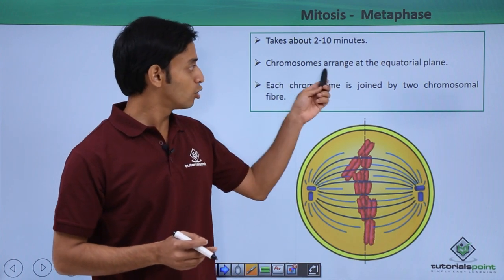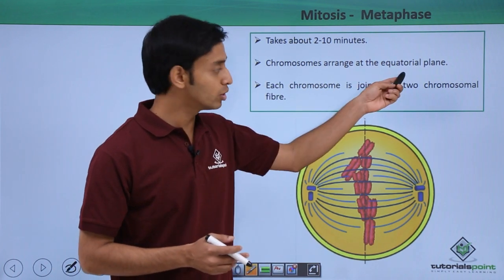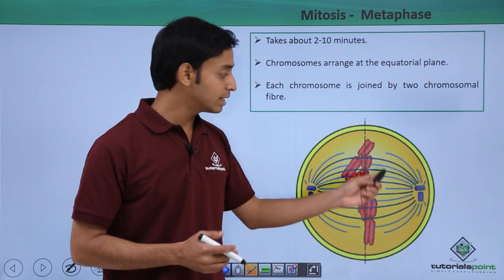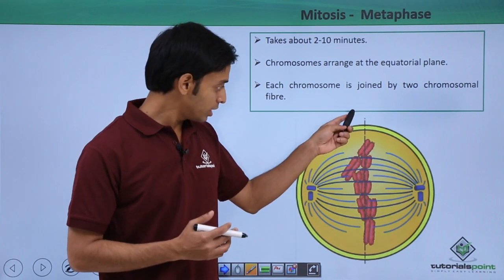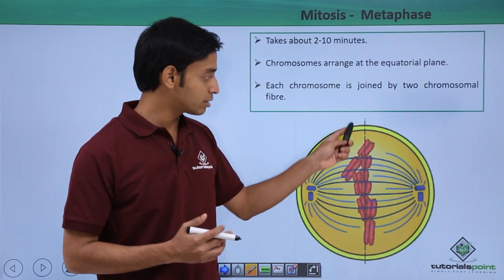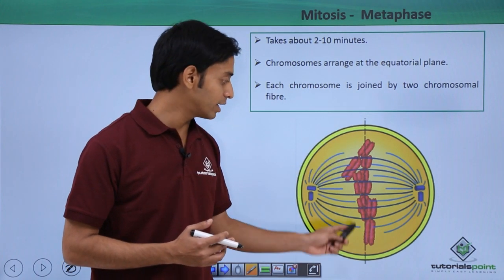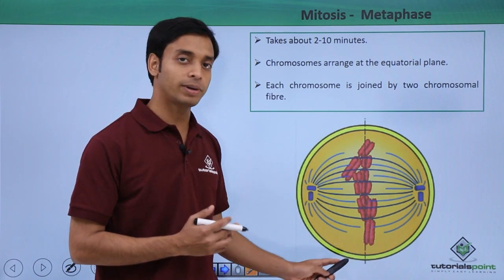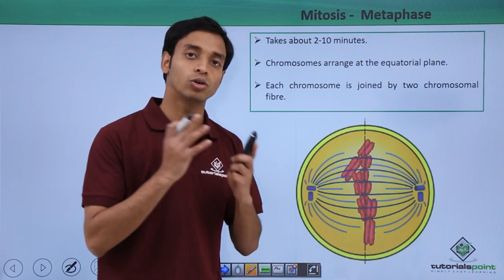During metaphase, the chromosomes are arranged at the equatorial plane. Let us take a look in this picture. Here we can see that a central axis has been made by a dotted line. The chromosomes have arranged themselves at the equatorial plate or the central axis of the whole cell.